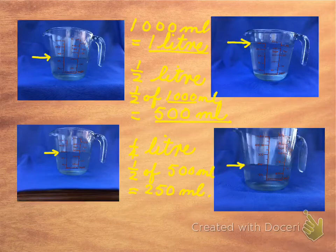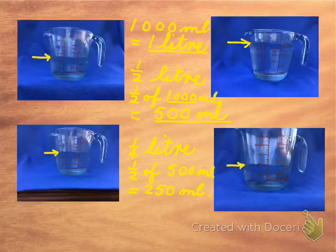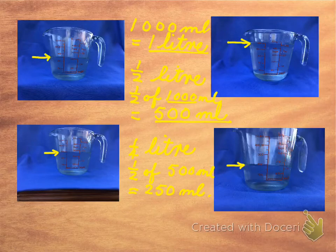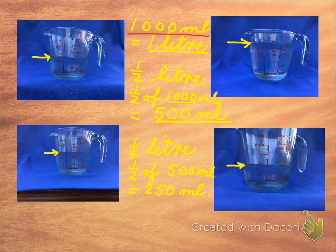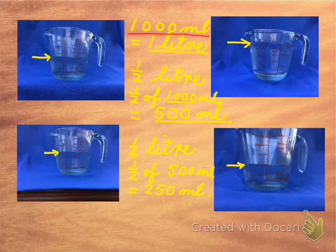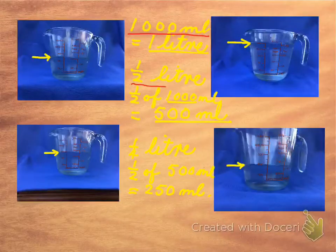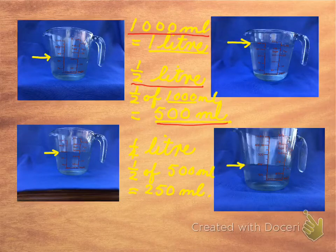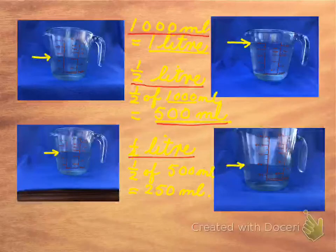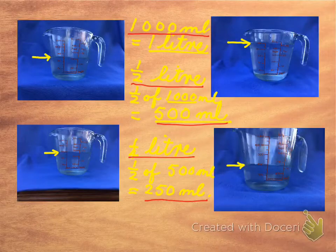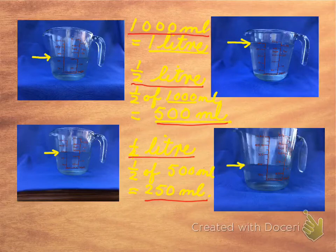Right, now, this is very important when we are doing volume and capacity. We have to know that in one liter, there are 1,000 milliliters. So in half a liter, there will be 500 milliliters. In a quarter of a liter, there are 250 milliliters or one measuring cup. Very important, please, to remember that.